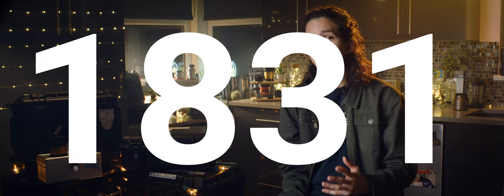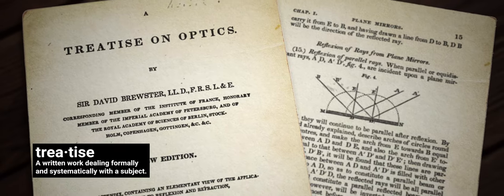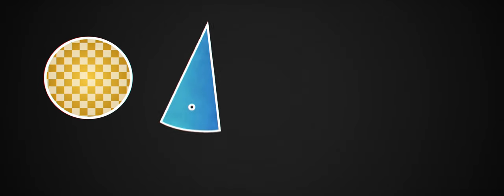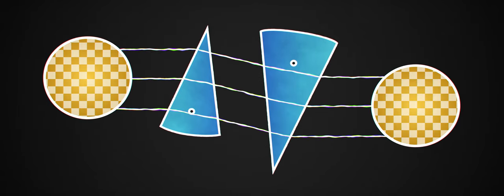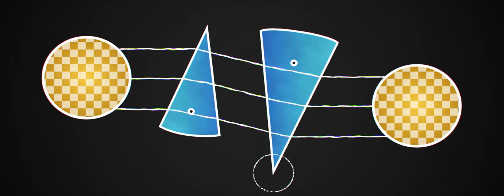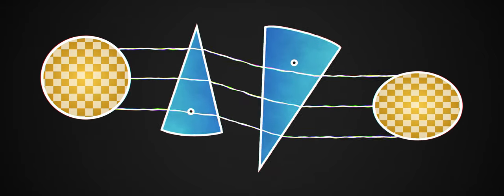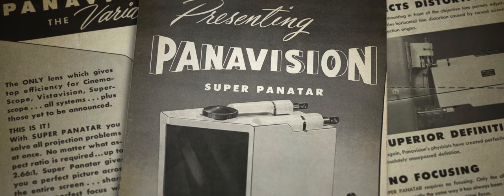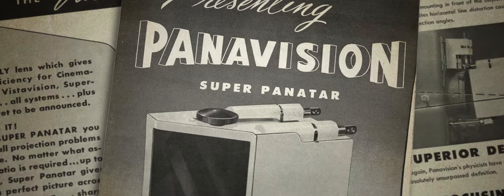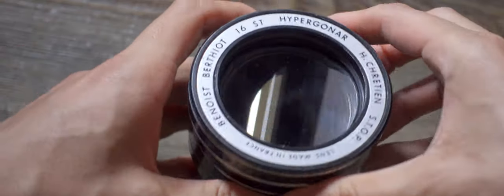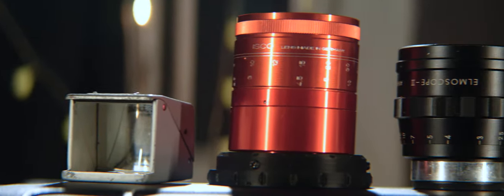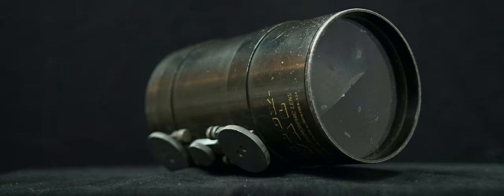The prism method was introduced in 1831 by Sir David Brewster in his treatise on optics. He demonstrated it with a pair of similar refracting prisms — one with the apex, or the pointy part, to the right, and the other one to the left. Changing the angle between them causes the image to be compressed or expanded in a single axis, making for a controllable variable squeeze anamorphic system. This concept is actually the base for Panavision's Super Panatar, which lived in the same time period as Chrétien's Hypergonar, both of these mentioned in the previous videos.